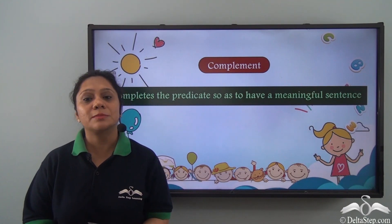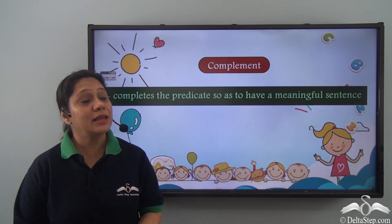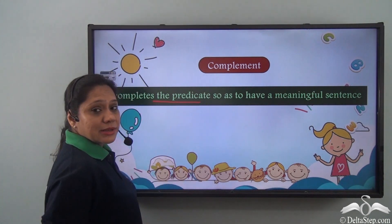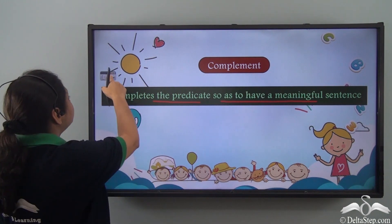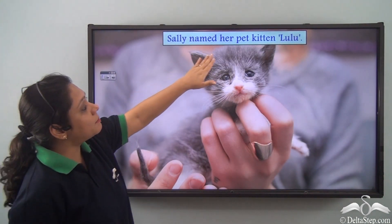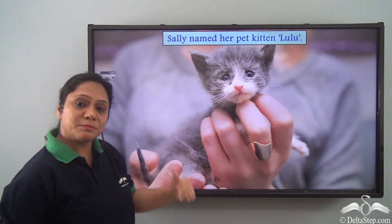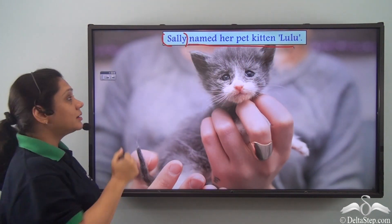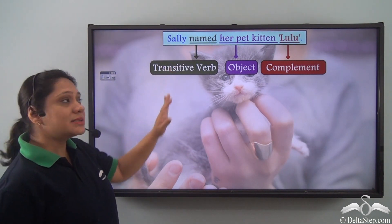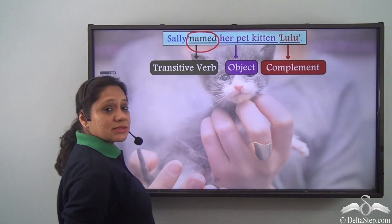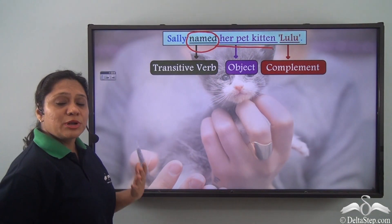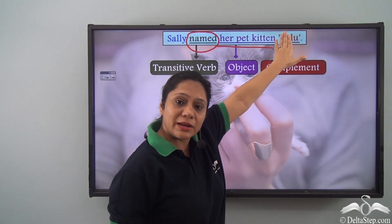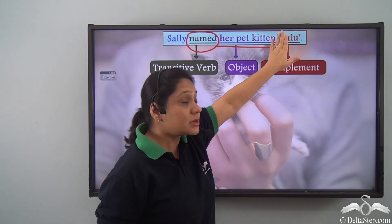We have already learned about the verbs of incomplete predication and that they need the complement. So what is the complement? The complement completes the predicate so as to have a meaningful sentence. For example, 'Sally named her pet kitten Lulu.' Sally is the subject, and 'named her pet kitten Lulu' is the predicate. This predicate has the transitive verb 'named' which takes the object 'her pet kitten.' If I would have just said 'Sally named her pet kitten,' the sentence would not be a meaningful one as the predicate would not have been complete.